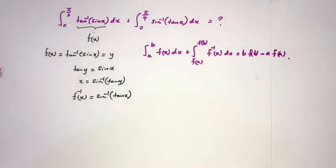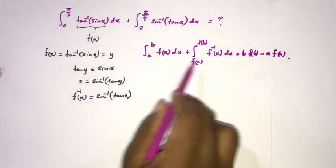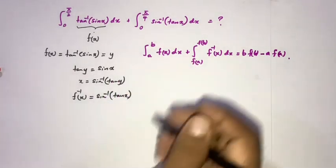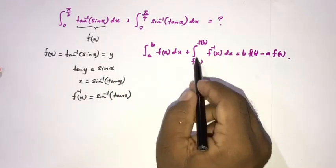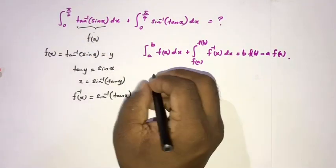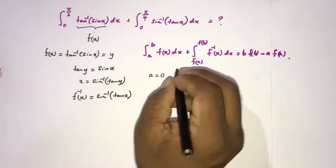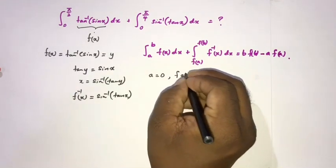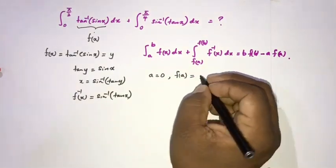Here we know f(x) is a strictly monotone function, so now to apply this formula we should check these boundaries. Here we know a is equal to 0.